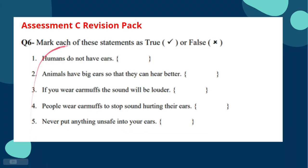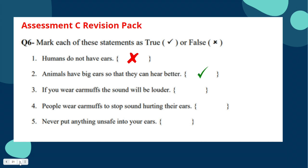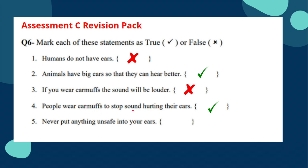Question six: mark each statement as true or false. 'Humans do not have ears' — false, we have two ears. 'Animals have big ears so they can hear better' — true, because their environment is a huge factor in ear size and structure. 'If you wear earmuffs, the sound will be louder' — false; people wear earmuffs to block sound. 'People wear earmuffs to stop sound hurting their ears' — true. 'Never put anything unsafe into your ears' — true; that is one way to take care of your ears.